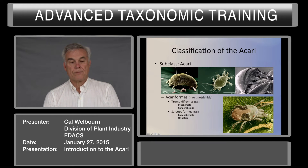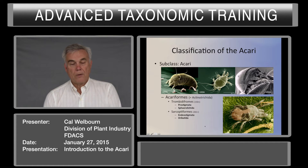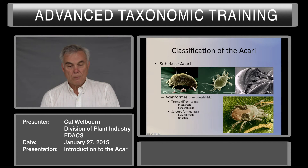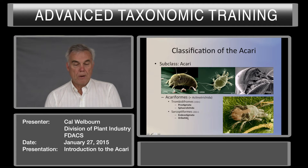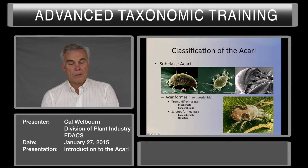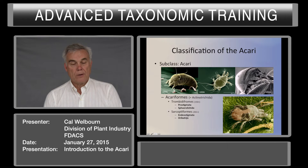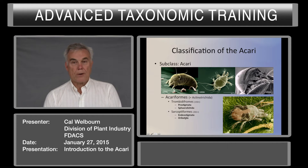The acariformes consist of two major groups, the Trombidiformes and the Sarcoptiformes. For agricultural purposes, most of the mites we're concerned with are in the Prostigmata. The oribatids are primarily fungivores, but we also have the Astigmata, which is a modified oribatid, and they can be pests of stored products.